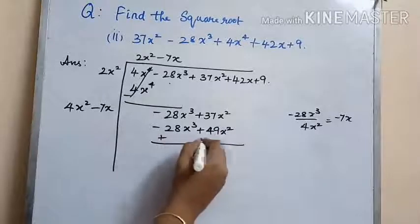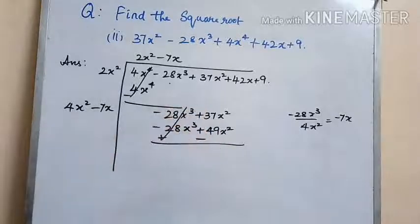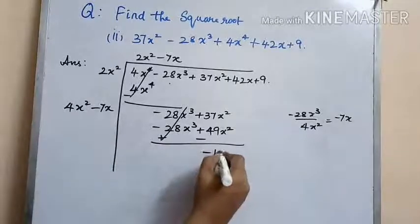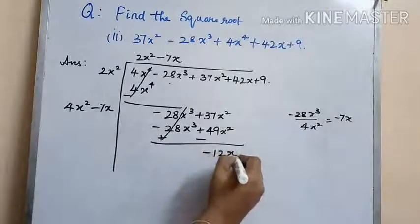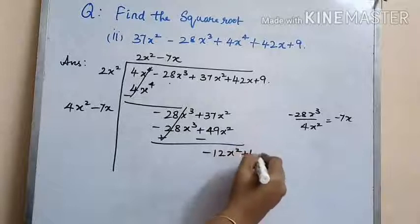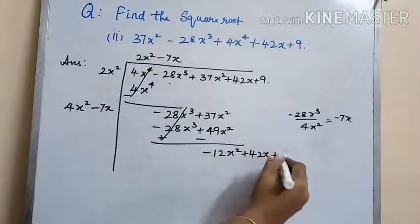Changing the signs and subtracting we get minus 12x squared. Bringing down 42x plus 9.